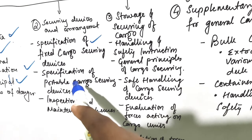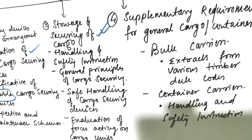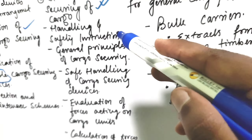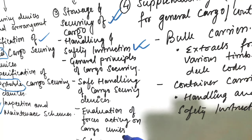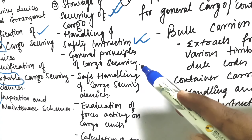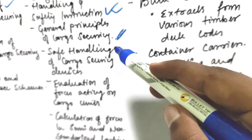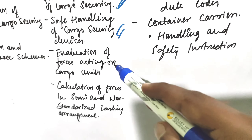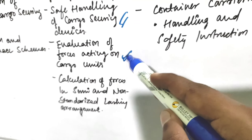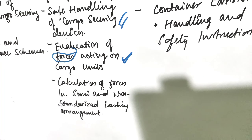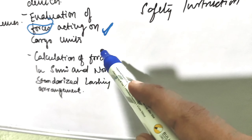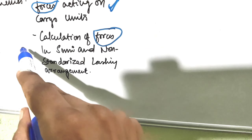The third section is Stowage and Securing of Cargo. In this we have handling and safety instructions, general principles of cargo securing, safe handling of cargo securing devices, evaluation of forces acting on cargo units, forces acting on cargo units, and calculation of forces in semi and non-standardized lashing arrangements.